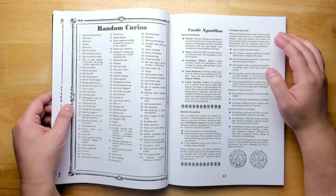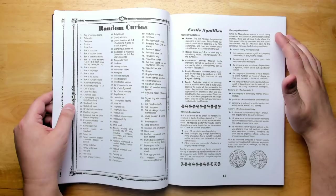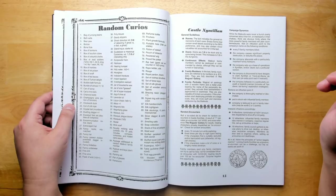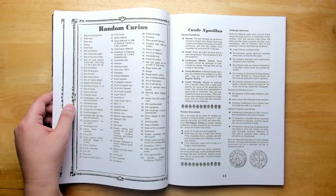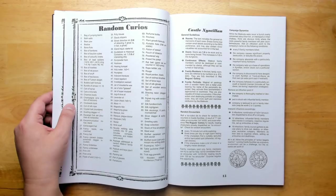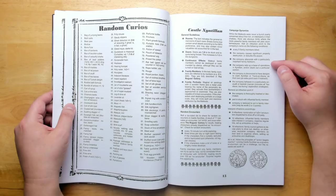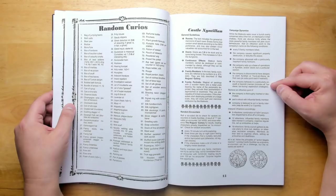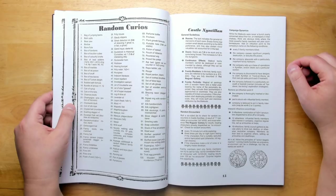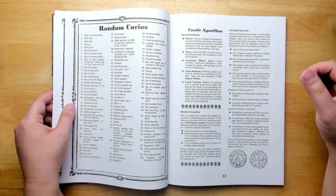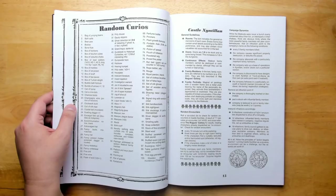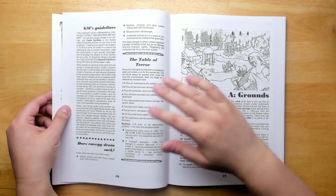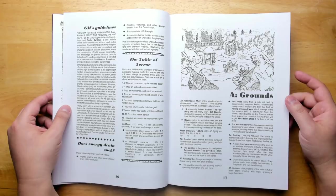While the Malivols, that's the family that used to own the castle and which now still haunts it, were never overly concerned about their kin or interlopers in their chateau, there are obviously limits where the more powerful family members will plan countermeasures. Add an infraction point to the company's name on the following conditions. So you are actually free to mess around in the castle pretty freely. There's dangerous stuff in there, but the family won't unite against you unless you really start messing stuff up. You can also get back in their good graces by doing stuff like getting thoroughly trashed, or a pact is struck with an influential family member. So there is a faction play element going on there where you want to not mess around with the family too badly unless you really have a lot of force on your side.